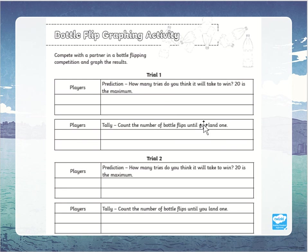Put your prediction there and then actually do the activity. Flip your bottle, trying to flip it until it lands. Write the number down, and then your partner will also try to flip their bottle over and over to see how many times it will take until it lands.